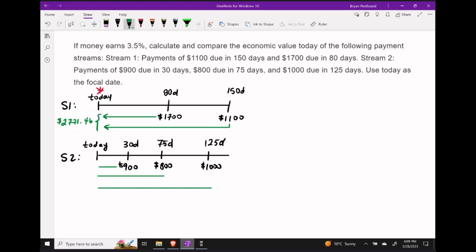Let's focus on payment stream two. We have three payments: $900, $800, and $1,000. We'll use a similar procedure, finding the principal amount or present value of our $900 first, followed by our $800, and then our $1,000. Adding all of these up will give us the fair market value today of this payment stream.